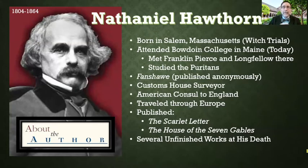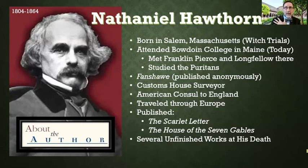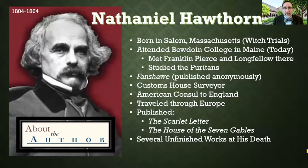His two most famous works — you might recognize the titles — are The Scarlet Letter and The House of the Seven Gables. The Scarlet Letter is a tale of Puritans again trying to seek out evil in the world. They accuse a woman of adultery and she must wear a scarlet red 'A' on her clothing at all times to identify herself to everyone else as a sinner. The story looks at the idea of when we persecute others for their wrongs — are we helping them, or are we making it worse?